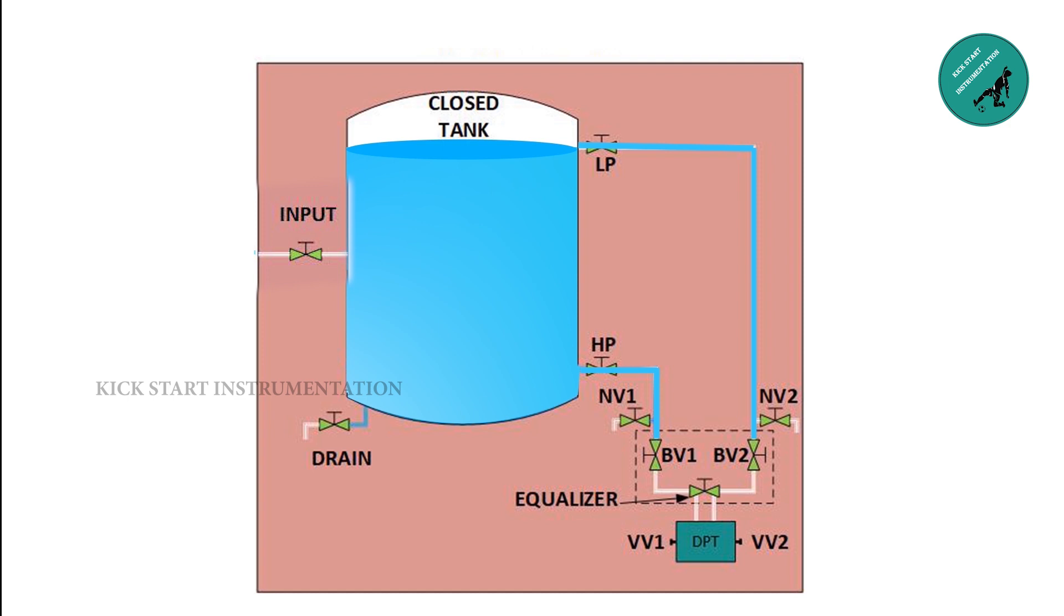Open needle valve 2 and drain the water of low pressure tube. Once the water goes below the provision of low pressure valve, drain will stop through needle valve 2.